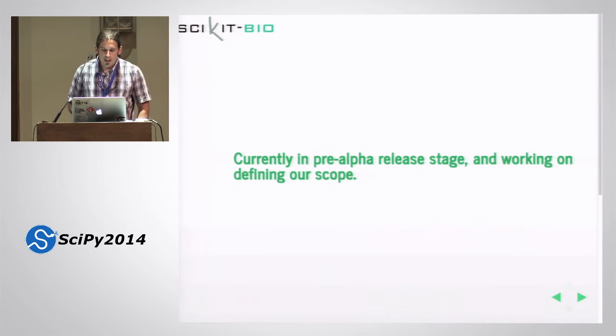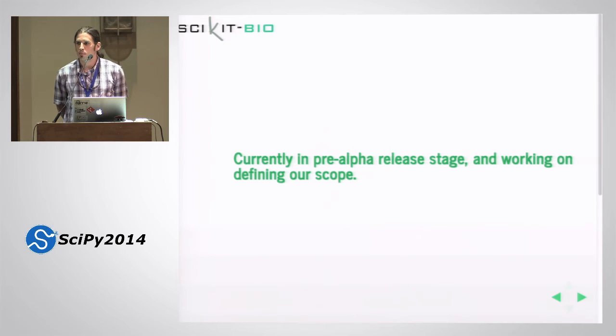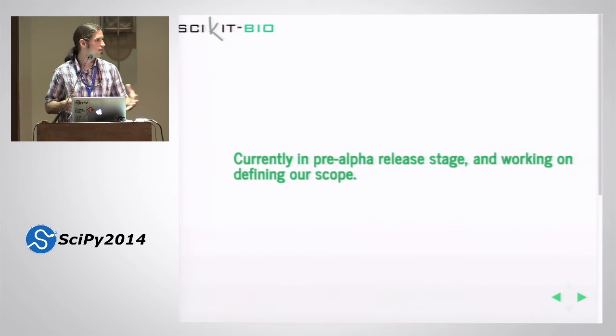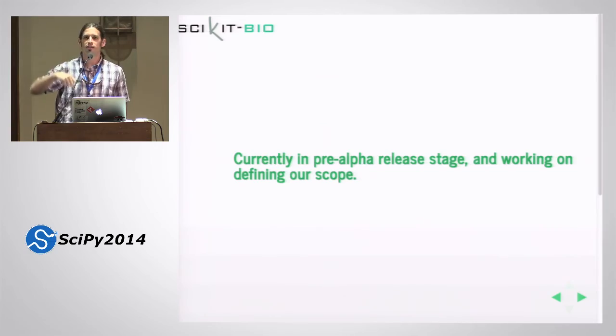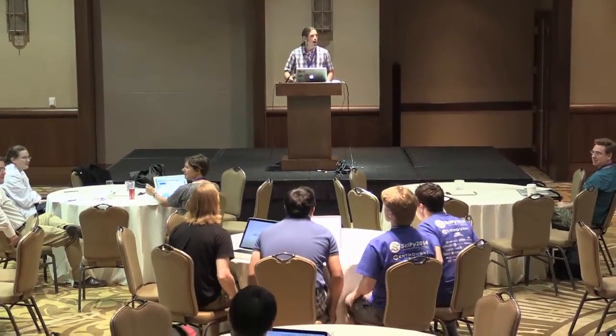So where are we and where are we going? We currently consider scikit-bio to be at pre-alpha release stage. We're very much at the point of trying to define the scope of the project, figure out what we want to include, and how best to build this package. We're very interested in getting input from the community — that's partly why we're here this week. I have four of the scikit-bio developers here with me; between the five of us we are some of the core developers. We're planning to sprint over the weekend with other people — specifically not sprinting on scikit-bio this year, but getting involved in other people's sprints to learn how they do them.